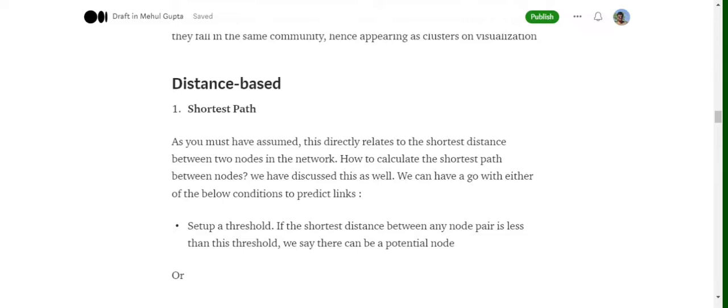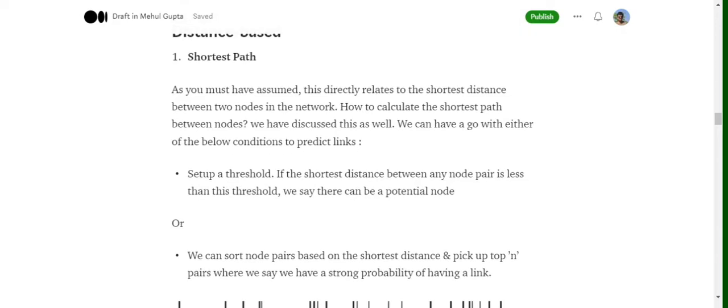So for example, of all the possible node pairs which don't have an edge between them in the graph, we first calculate the shortest distance and take top 10 lowest shortest distance paths and eventually form edges between those nodes.